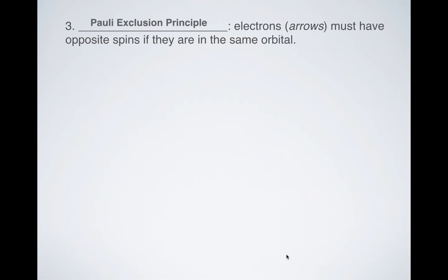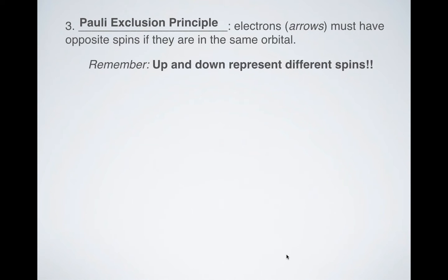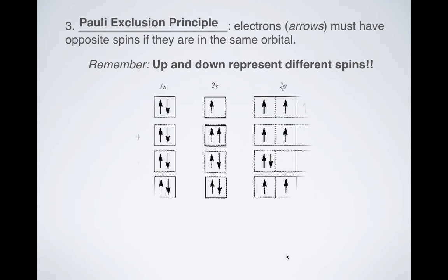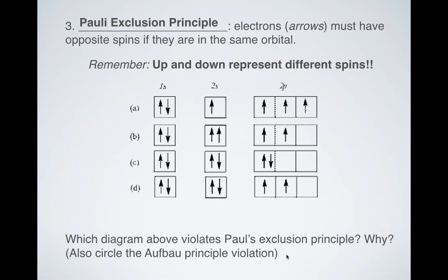Last one, Pauli exclusion principle. The Pauli exclusion principle says that electrons must have opposite spins. That means that up arrows and down arrows have to be present in each box. You can't have two up arrows or two down arrows in the same box because up arrow and down arrow, those are the different spins technically that the electrons have. So if we're looking at this again, let's see which one of these violates the Pauli exclusion principle, A, B, C, or D? Pretty obvious, right? B. You can't have two up arrows.